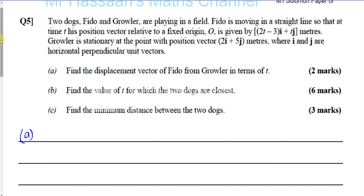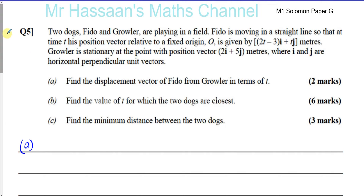Now a question from one of the Solomon papers — Solomon Paper G, question number 5, which is also part of my end of topic worksheets for my classes at school, worksheet number 3: Vectors. And it's also question 5 of that as well.